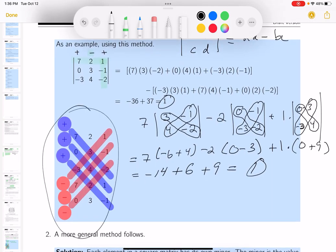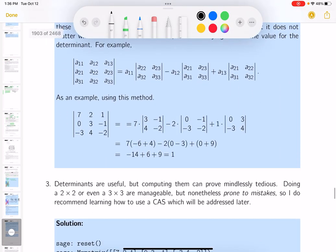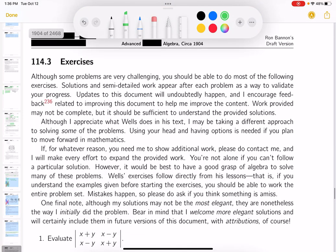Now, you might say I'd rather do this method. That's fine. So they talk about a more general method. I like the best method of all to be honest with you is using a computer to do it. Determinants are useful but computing them can prove mindlessly tedious. Doing a two by two or even a three is manageable but they're prone to mistakes. So I do recommend learning how to use a computer algebra system to address this. So bottom line if you want to look at the code, this is just a determinant we just did.